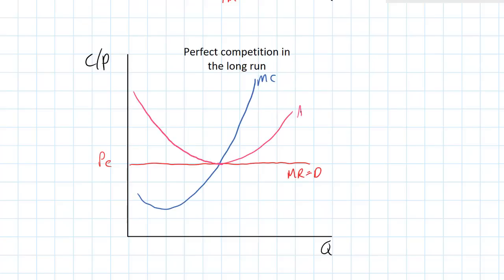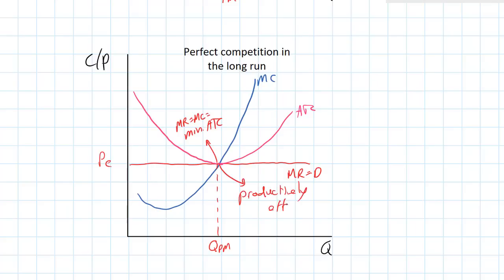At its MC equals MR point, the profit-maximizing point, the firm will earn zero economic profits. However, the benefit is that firms will be productively efficient because they're producing at their lowest cost level of output. There are no economic profits in the long run — entry will eliminate profits and exit will eliminate losses.